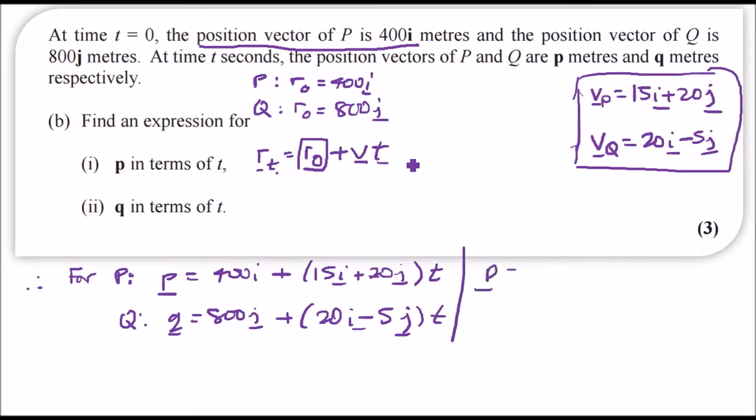I'll just tidy this up, put these vectors in terms of i's and j's. For position vector P, we have 400i and 15ti, so collect terms: we're going to have 400 plus 15t in the i direction, and in j we just have 20tj.